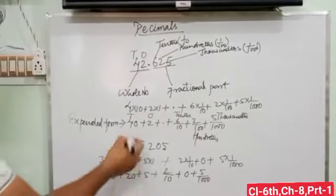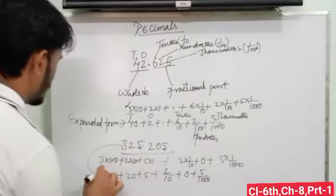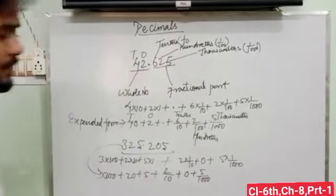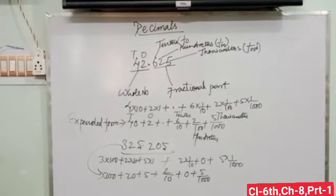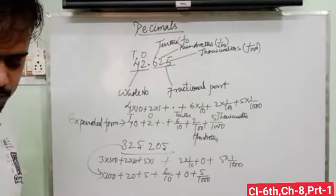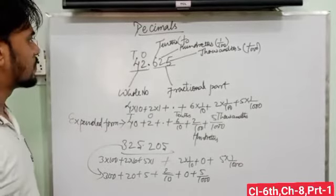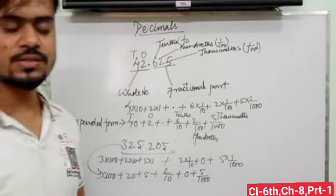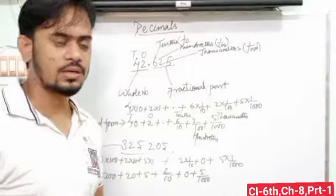This is the expanded form. There are two types of decimals: first is like decimals, and another one is unlike decimals.